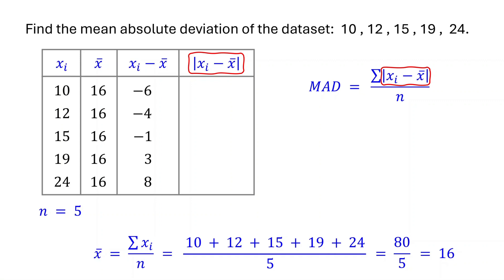The absolute value of negative 6 is positive 6. Remember, the absolute value of a negative number becomes positive. And the absolute value of a positive number stays positive. These values are called absolute deviations.